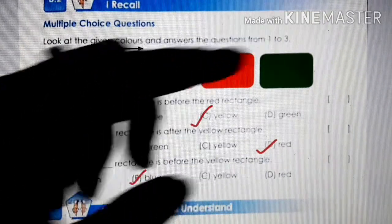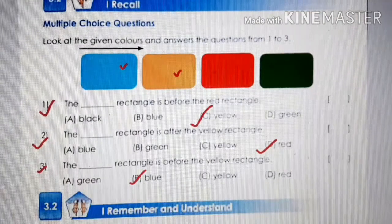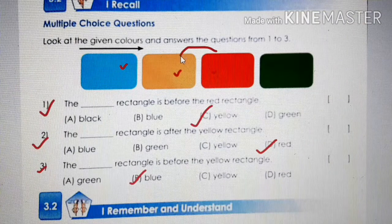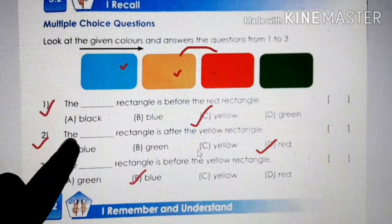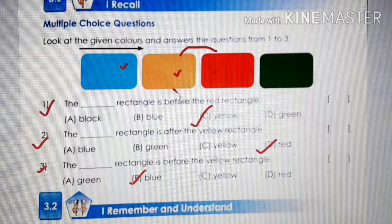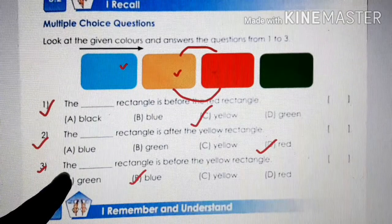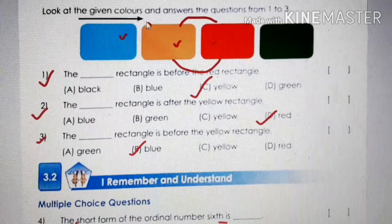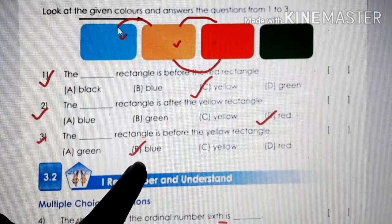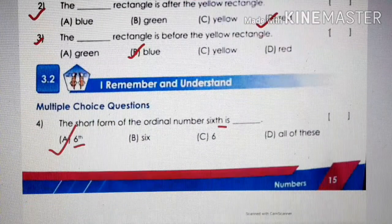Next, look at the given colors and answer questions one to three. The dash rectangle is before the red rectangle — which rectangle is before the red rectangle? Yellow rectangle, so the correct option is yellow. The dash rectangle is after the yellow rectangle — what comes after yellow? Red rectangle, so the correct option is red. The dash rectangle is before the yellow rectangle — which color? Blue, so the correct option is blue.